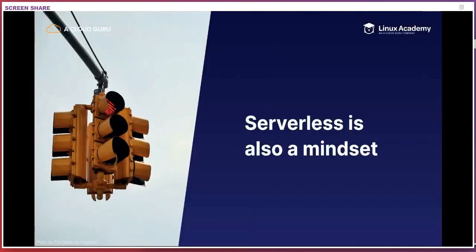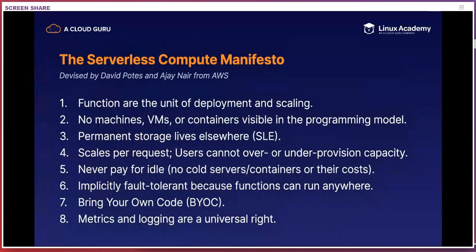You might have heard me say that serverless is not just technology — it's also a mindset. A few years ago, David Potts and AJ Nair from AWS published their serverless compute manifesto. Essentially it states: functions are the unit of deployment and scaling; there are no machines, VMs, or containers visible in the programming model; permanent storage lives elsewhere; they scale per request and users cannot over- or under-provision capacity; you should never pay for idle — no cold servers or containers and the associated costs; and they're implicitly fault-tolerant because functions can run anywhere.